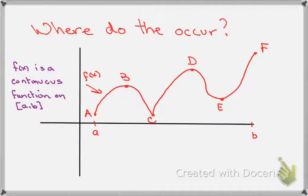And so you'll notice that A and F are the endpoints. And the points B, C, D, and E are actual critical points. These are the places where the function would have local extrema.